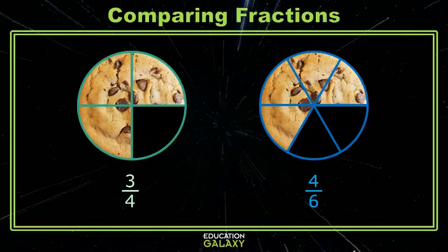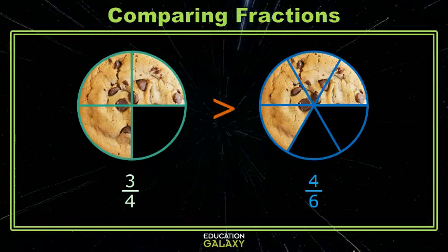Just by looking, it does appear that there is more cookie on the left than on the right. I think I could safely conclude that 3 fourths is greater than 4 sixths. But what if the models weren't very clear, or I don't have models? Then how could I compare these two fractions?